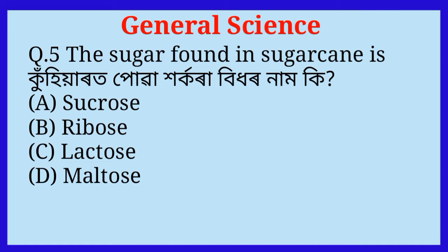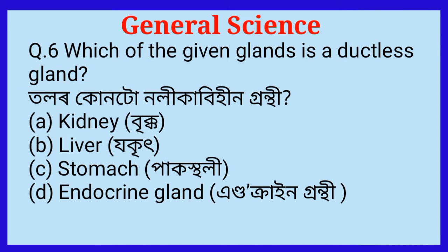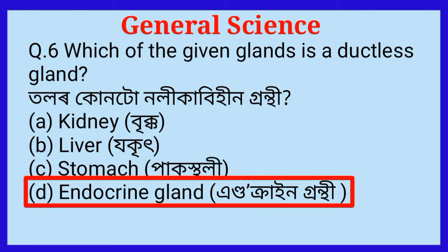Question number five: The sugar found in sugarcane — what is its name? The answer is option A, sucrose. Question number six: Which of the given glands is a ductless gland? The answer is option D, endocrine gland.